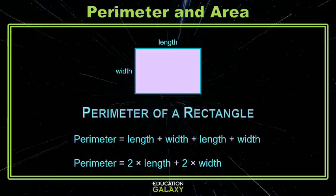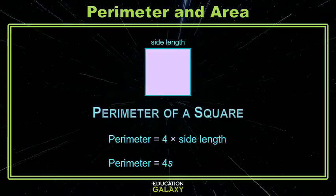What happens when we have a square? A square has all sides the same length, so sometimes for perimeter of a square you'll see four times the side length, or four times s.